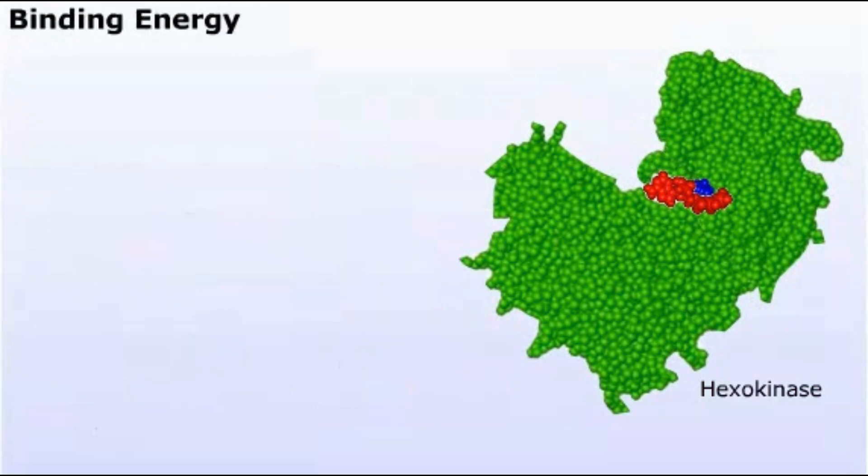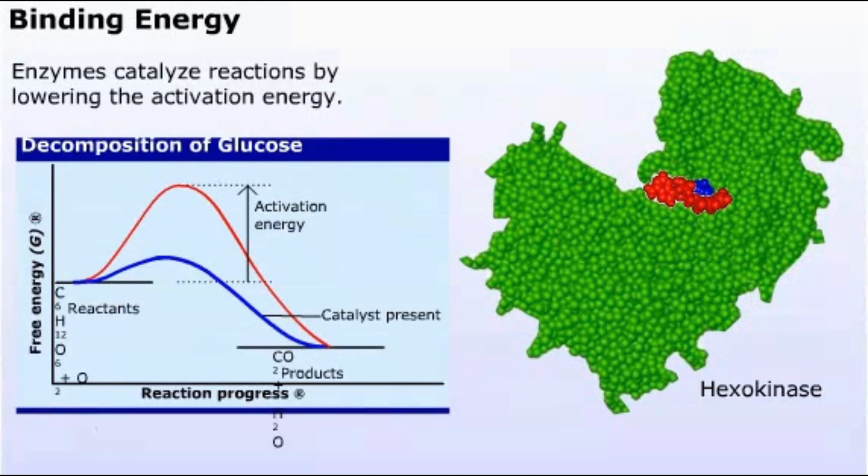How do enzymes work? Enzymes catalyze reactions by lowering the activation energy. How do they lower the activation energy? Enzymes are relatively large molecules. They form many contact points with their substrates.